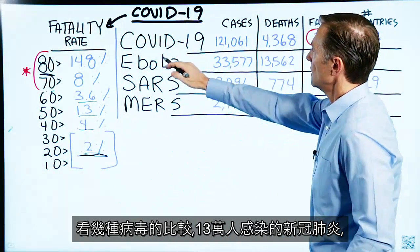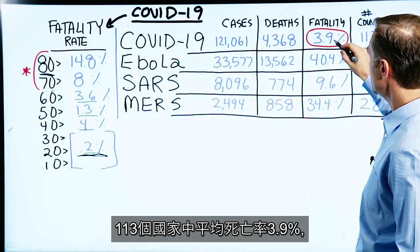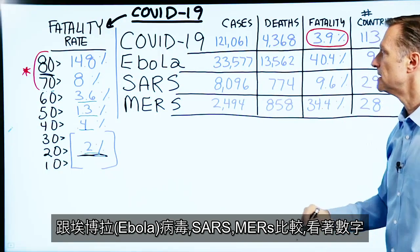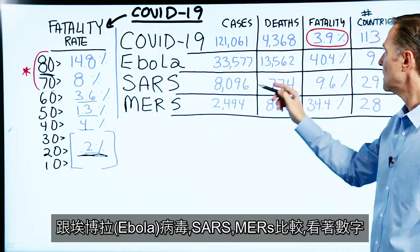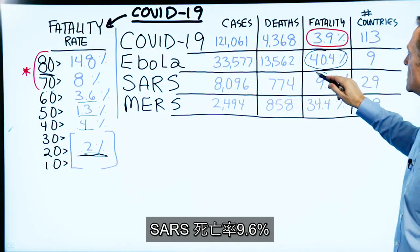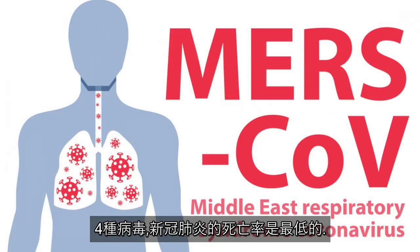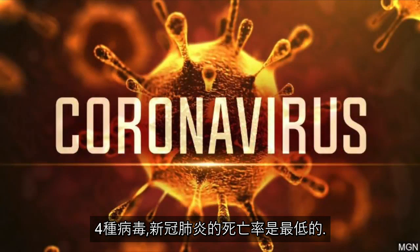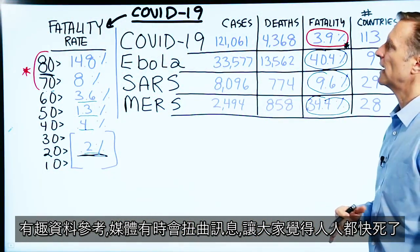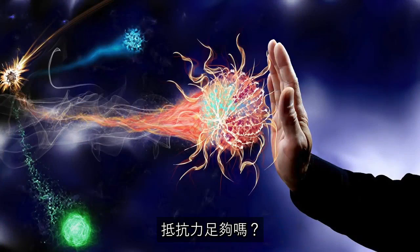Let's compare the coronavirus to other viruses. There are 121,000 cases with a 3.9% fatality rate across 113 countries. Compare that to Ebola at 40%, SARS at 9.6%, and MERS at 34.4%. The coronavirus actually has the lowest fatality rate of these four. The news distorts things and makes it sound like everyone's going to die, when that's not actually true. It really depends on the strength of your immune system and how well you can resist it.